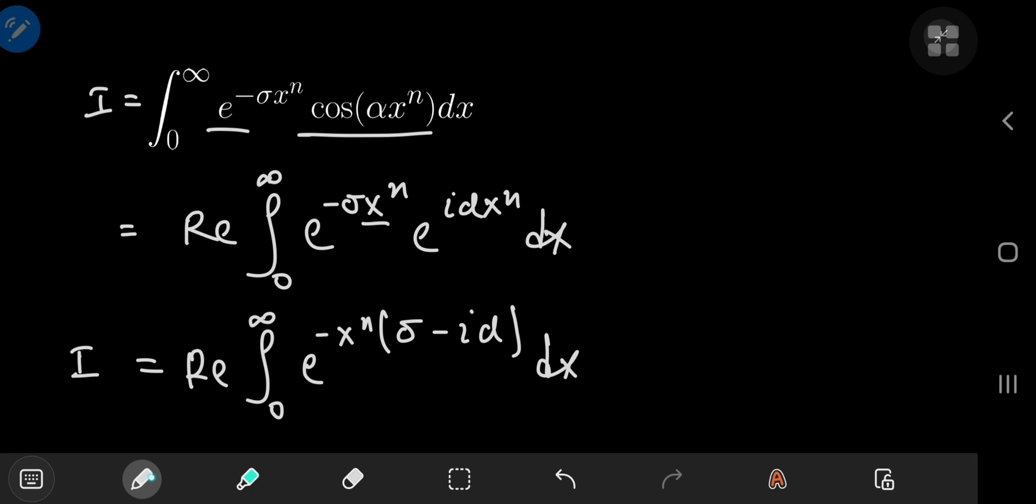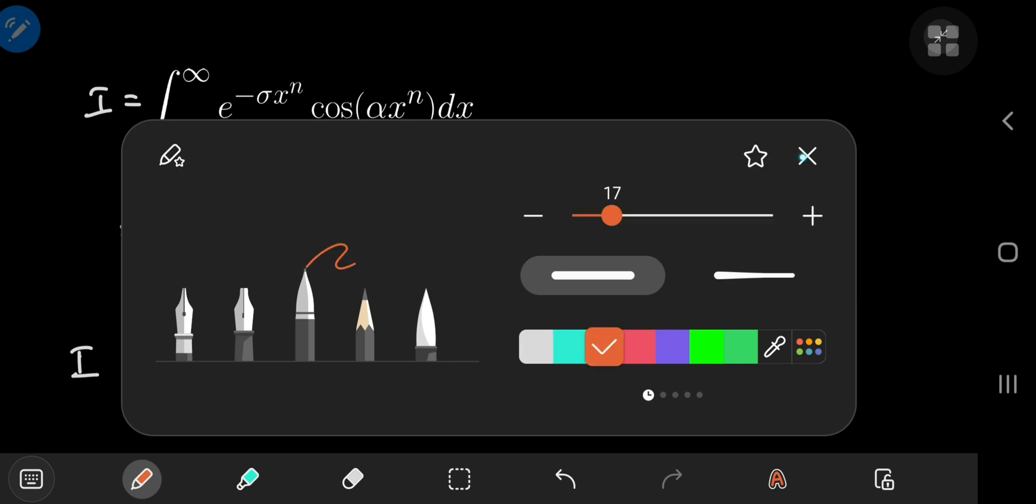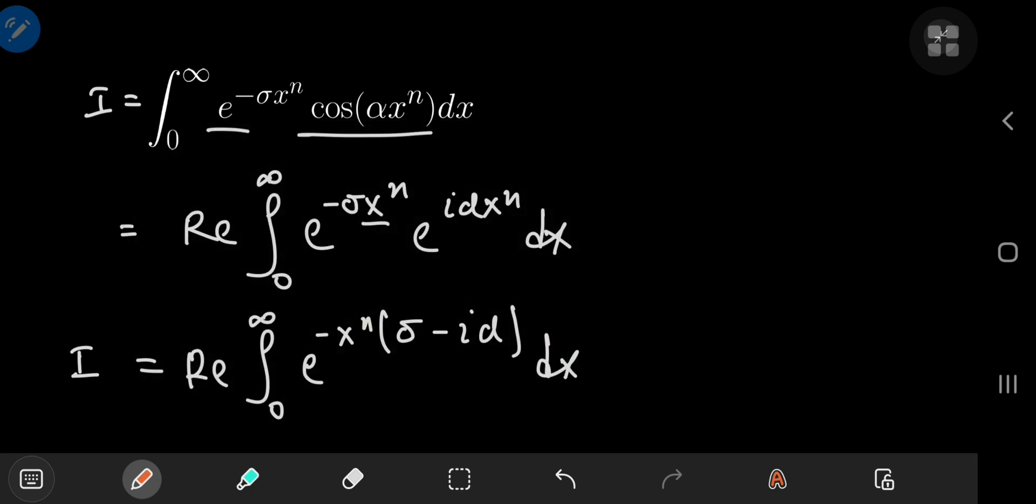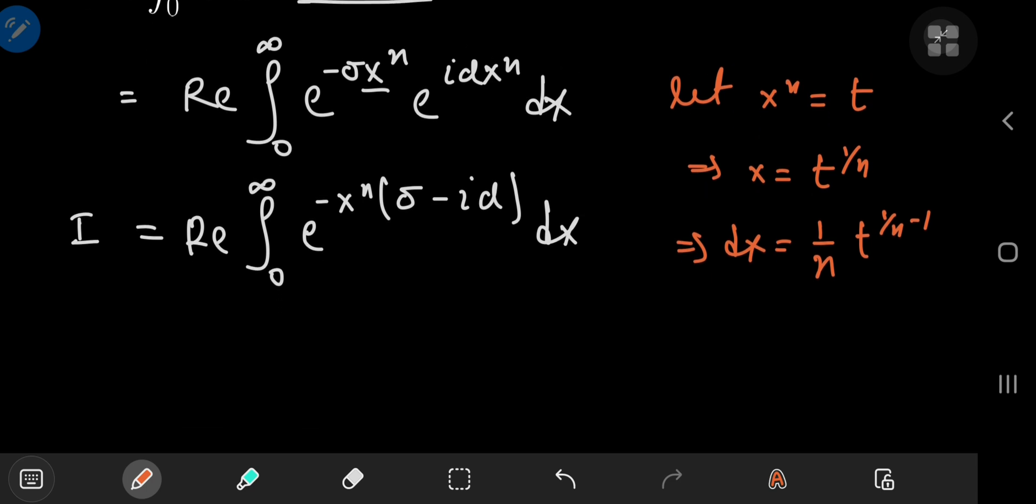That seemed cool, but now what? Well, we're going to perform a pretty nice substitution here, where we let x to the n equal t. Now this implies that x equals t to the 1 by n, which implies further that dx equals 1 by n times t to the 1 by n minus 1.